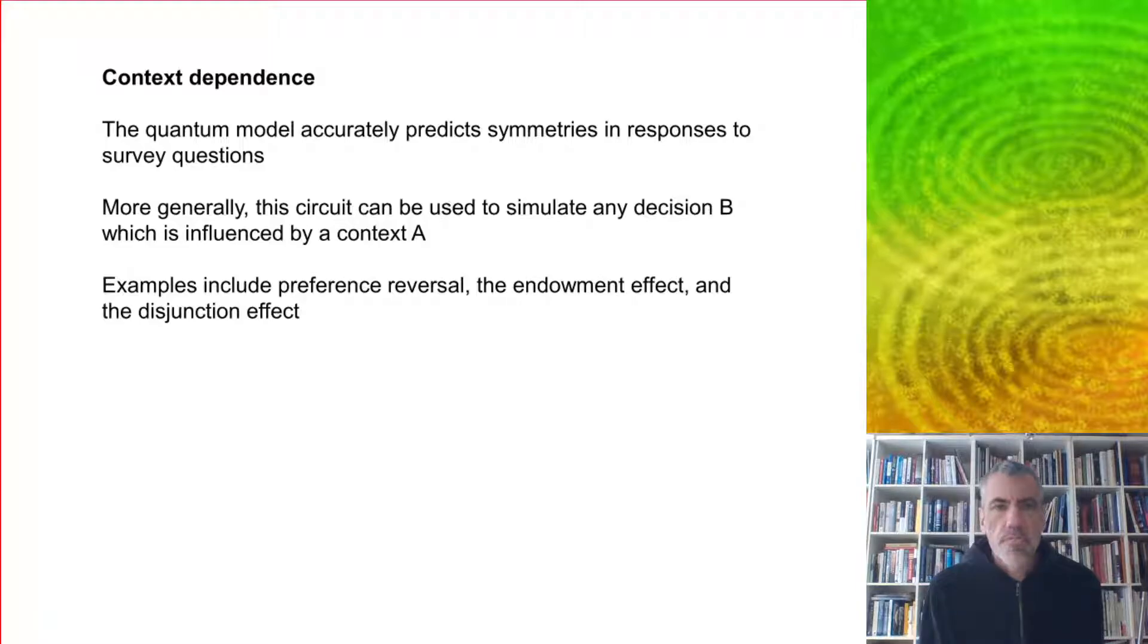The quantum model for this order effect was very successful because it accurately predicts symmetries in response to survey questions. If you look at how many people vote yes or no to each, there are certain symmetries which are there in the data, which were picked up very well by the quantum model.